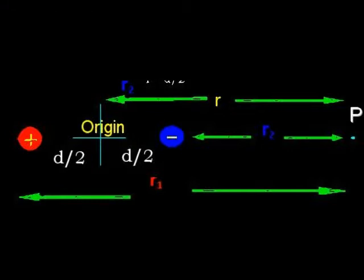Consider r1 to be the distance from the positive charge to point P, so r1 is equal to r plus d over 2. And similarly, r2, which is the distance from the negative charge to P, is equal to r minus d over 2.